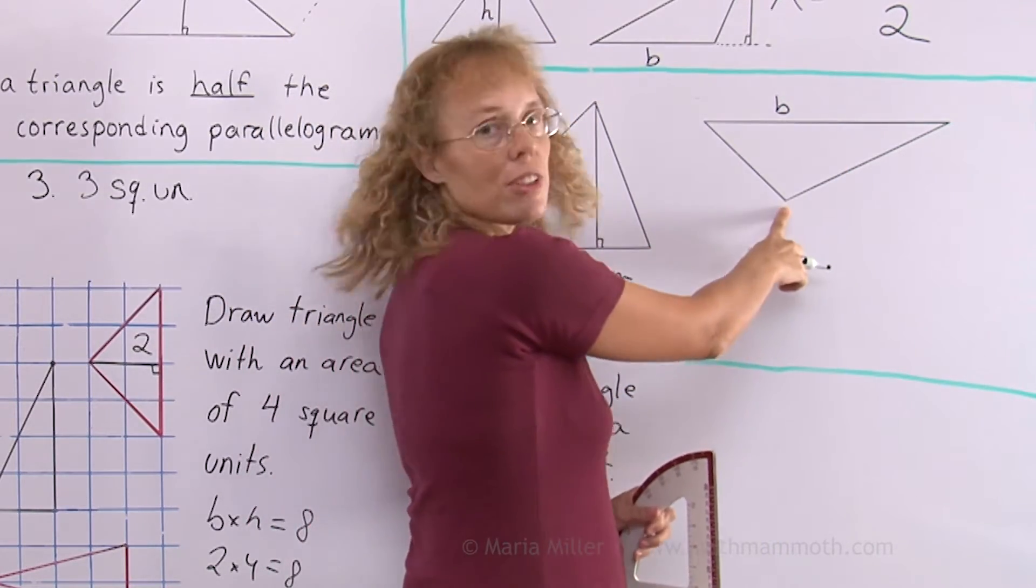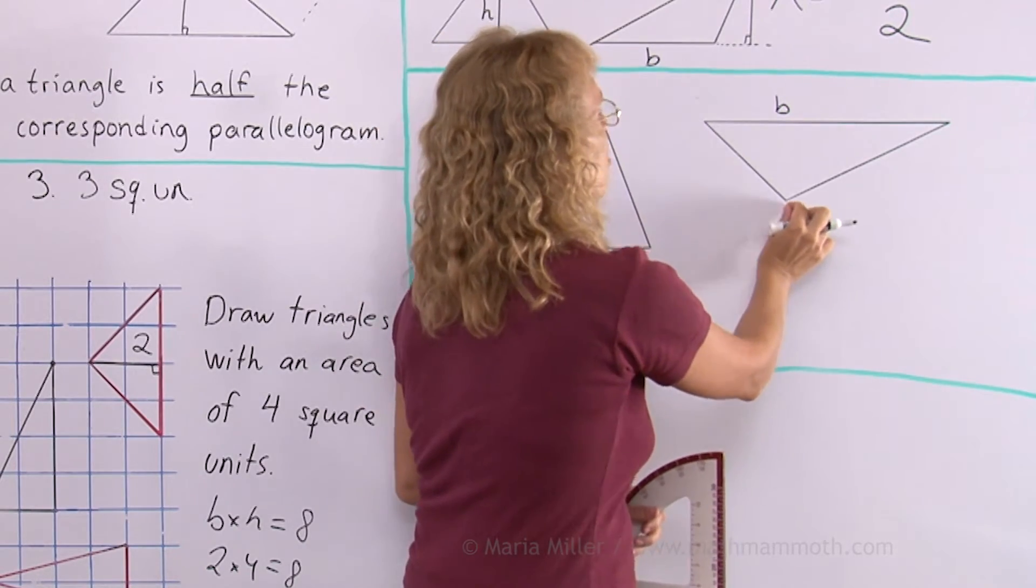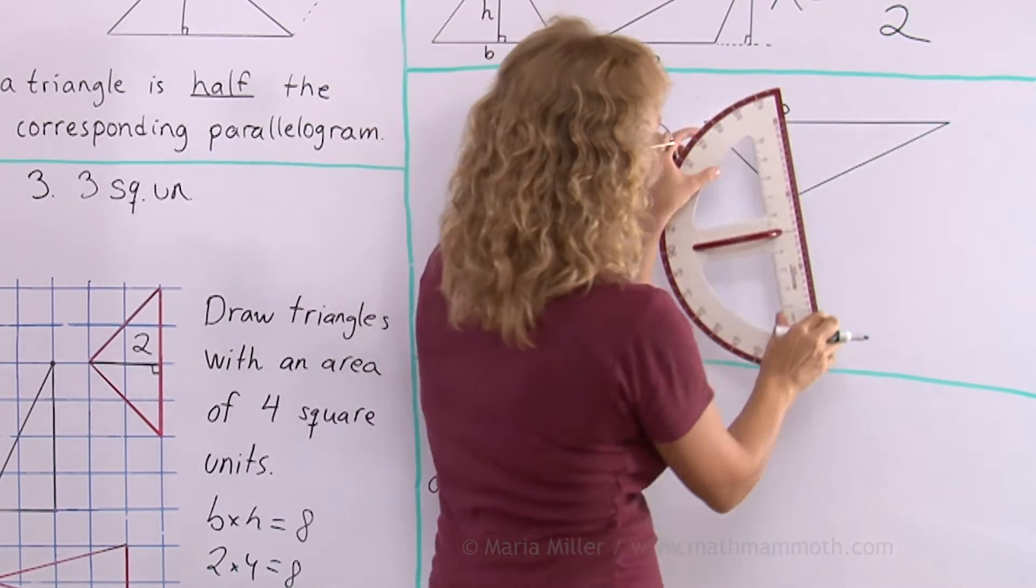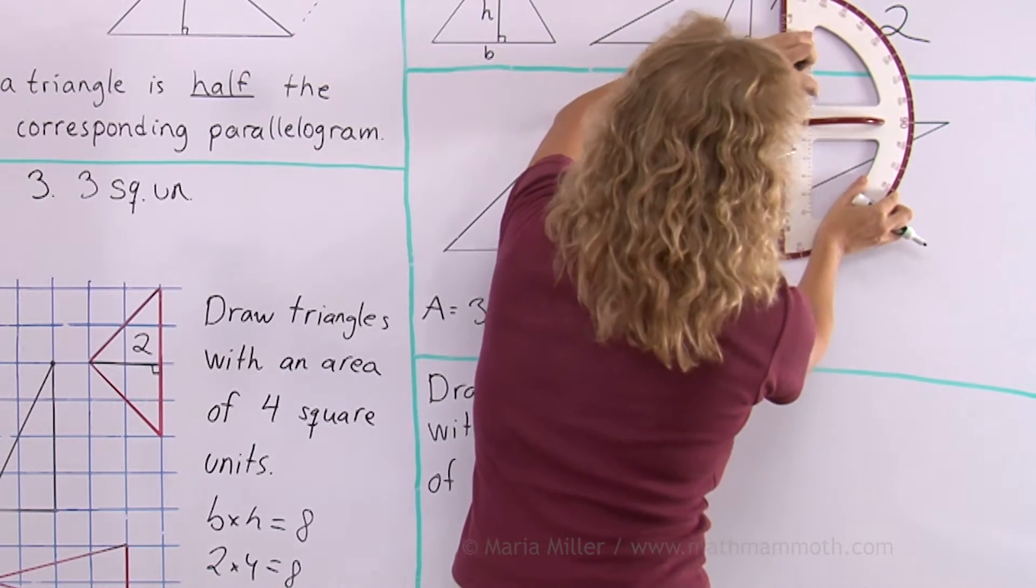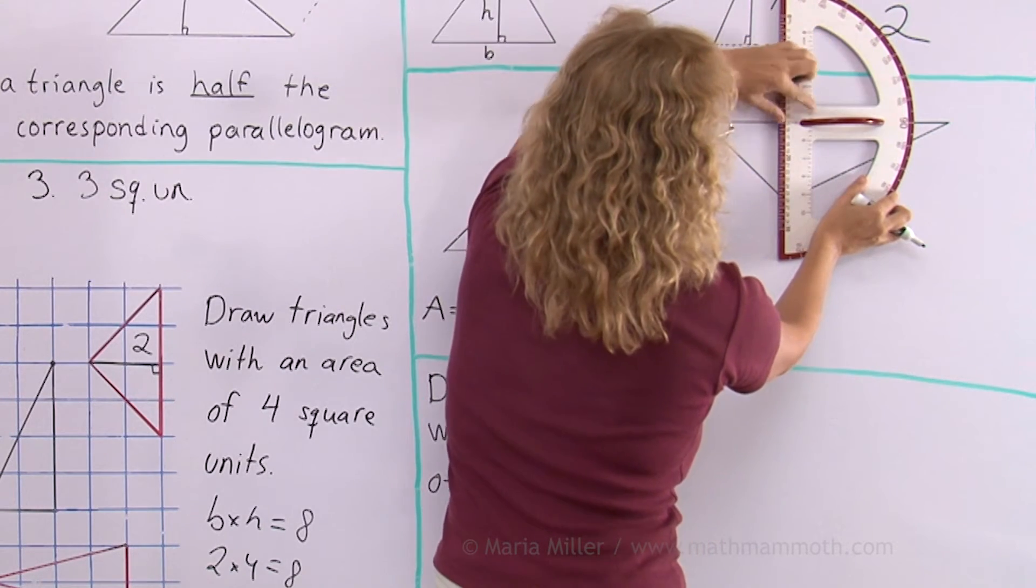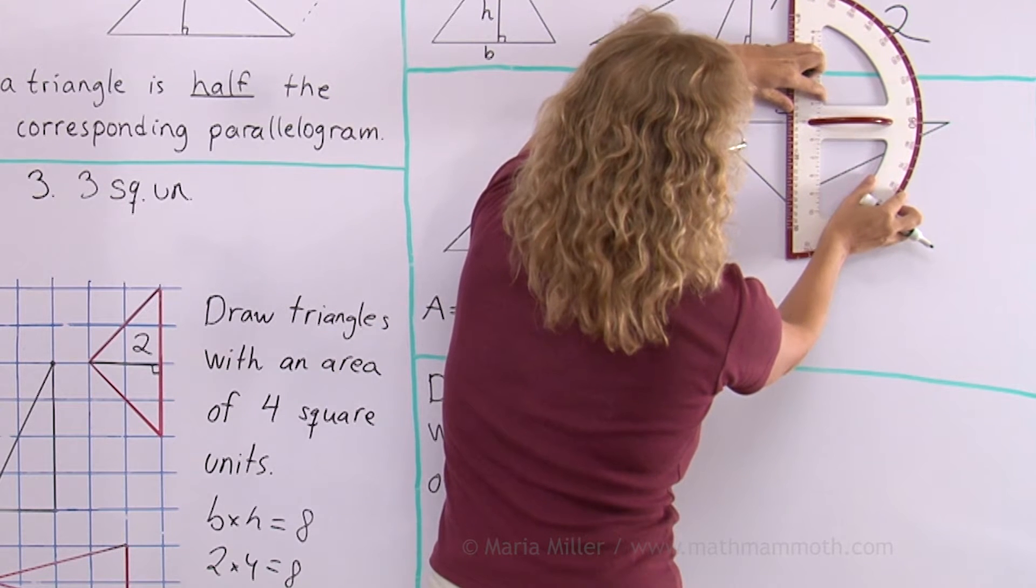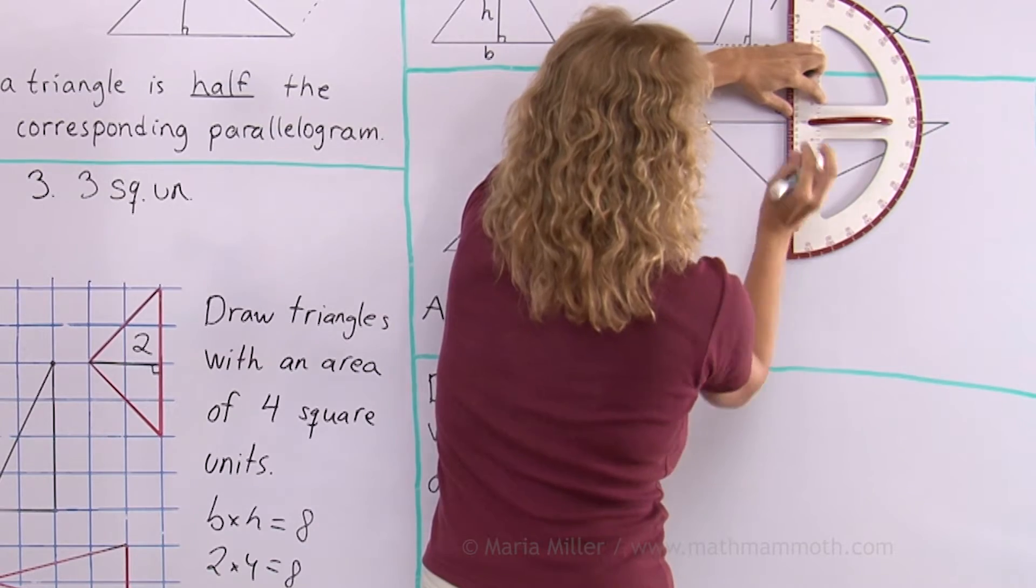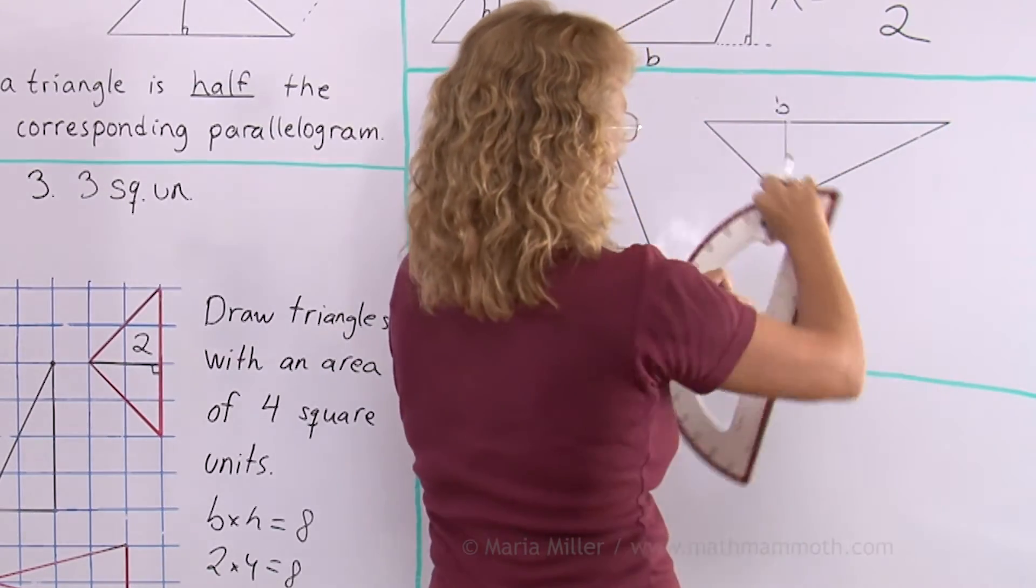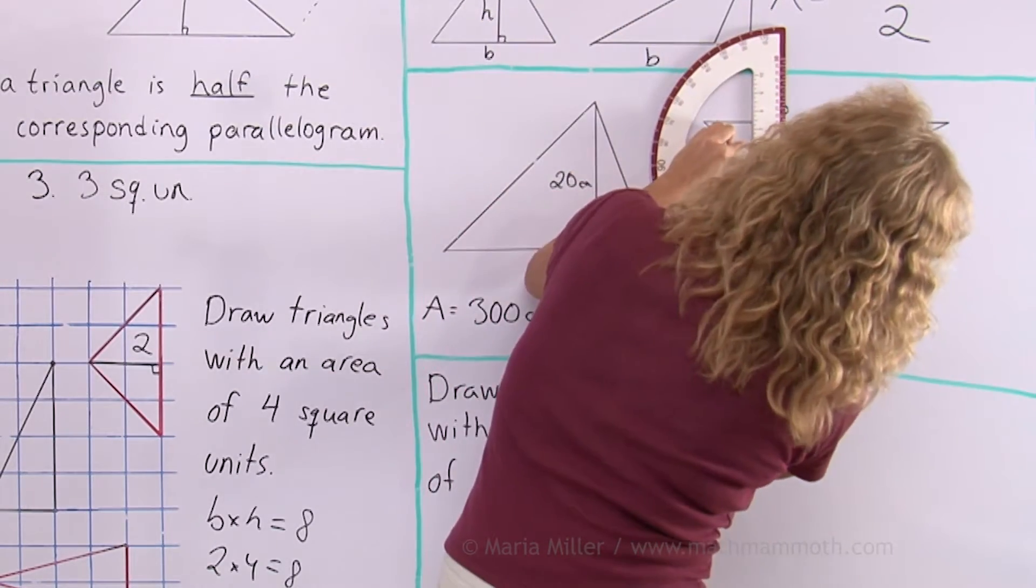And then this becomes the vertex from which you draw the altitude back towards the base. I line this 90 and this midpoint and then I slide it until my line will be going through the vertex here. Okay. And then measure 11.